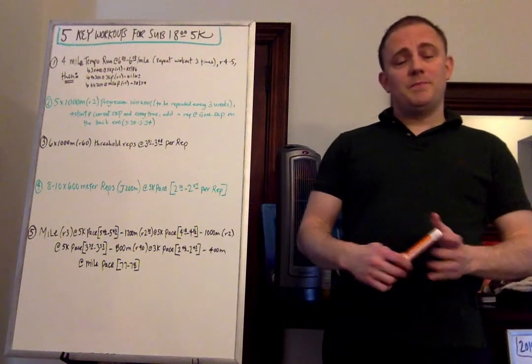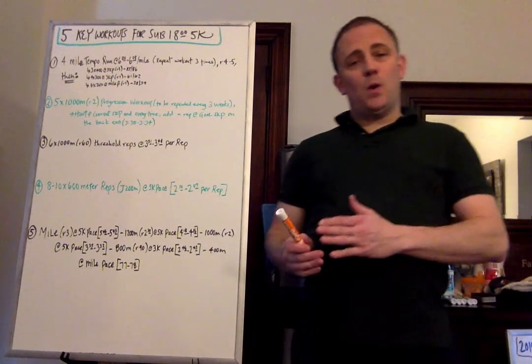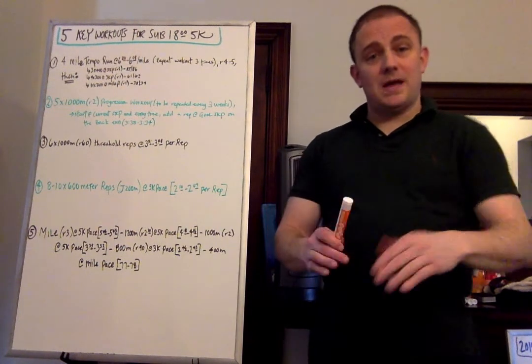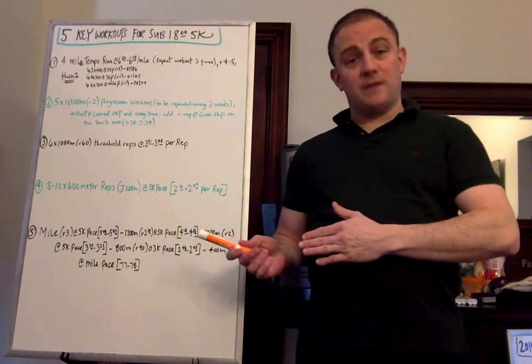Hey guys, it's Coach Jason. So I want to pivot from my 7 key workouts for marathons, for sub 4 hours, sub 3:30, sub 3 hours, and sub 2:30, and I want to move over to a 5K now.